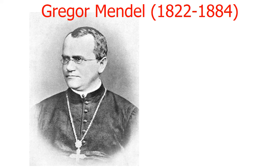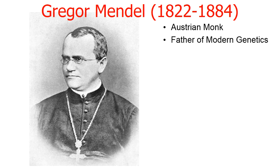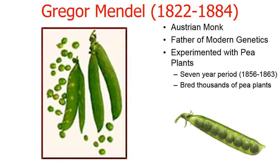Our knowledge of genetics really began with Gregor Mendel. Gregor Mendel was an Austrian monk, and today we recognize him as the father of modern genetics because of his work experimenting with pea plants. This experiment lasted over seven years, and he bred thousands and thousands of different pea plants in order to learn the basics of heredity.